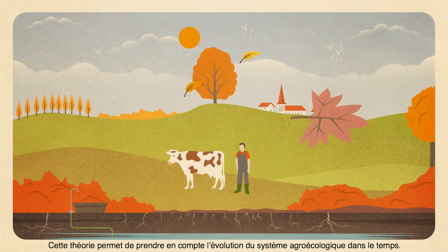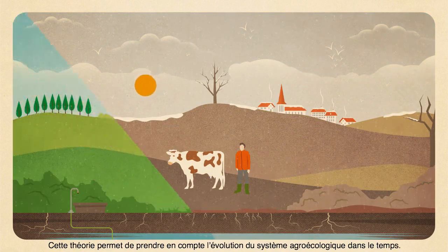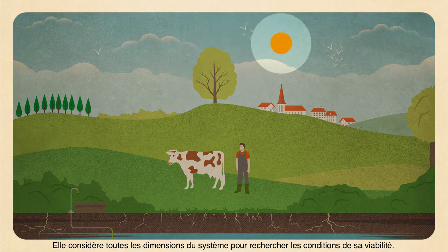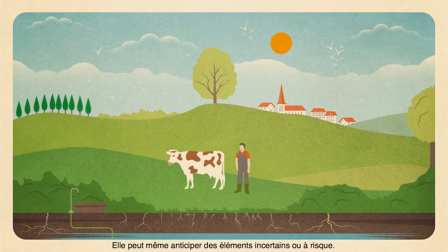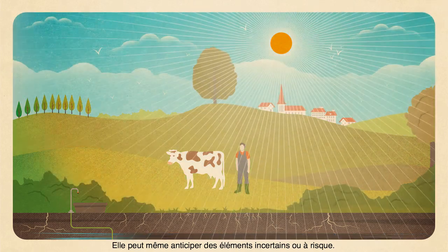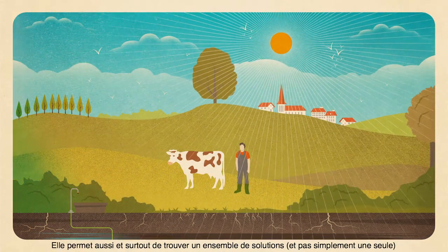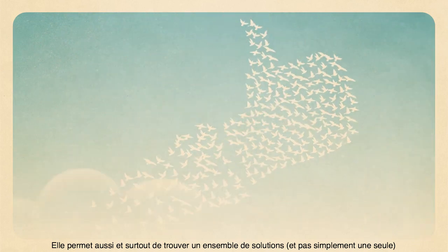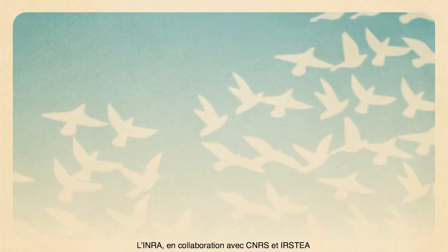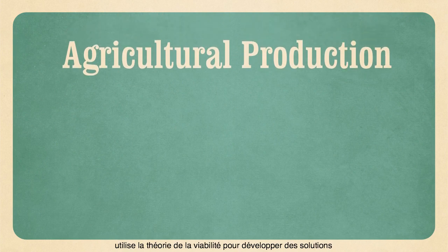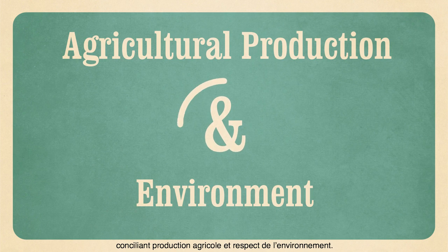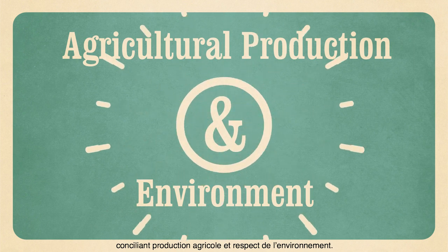A prairie. This theory makes it possible to take into account the agroecological system's change over time. It considers all of the dimensions of the system to look for the conditions of its viability. It can even anticipate uncertain or high-risk elements. Above all, it also enables the discovery of a set of solutions, not just one. At INRA, in collaboration with CNRS and IRSTEA, we use viability theory to develop solutions which strike a balance between agricultural production and respect for the environment.